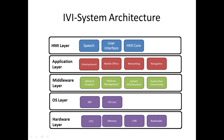Hello friends. In this video we will talk about basics of automotive infotainment systems, also called as IVI systems — that is, In-Vehicle Infotainment. In the first slide we will talk about a typical IVI system architecture which consists of five layers.